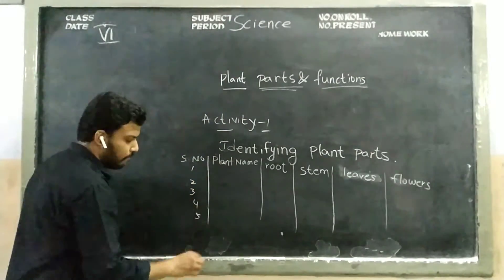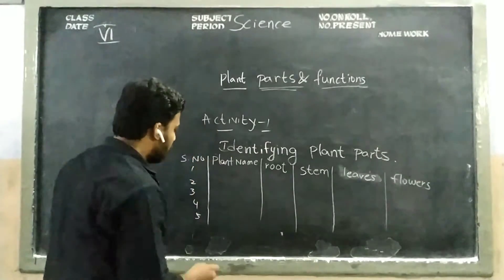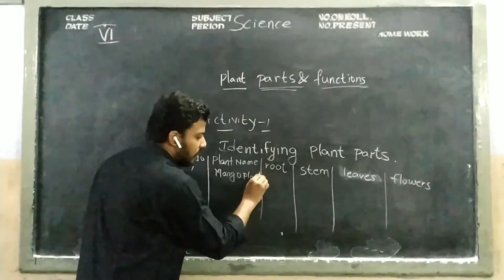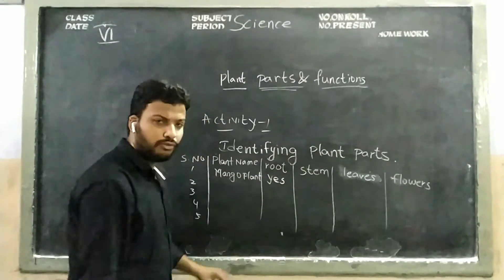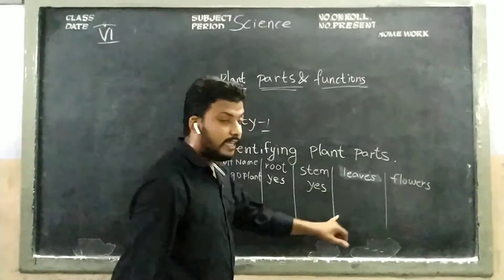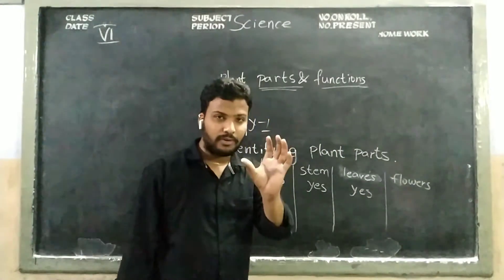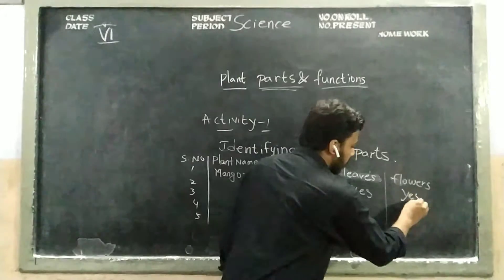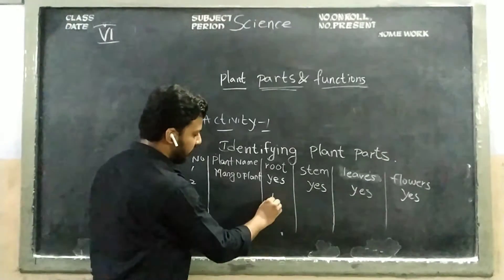For five plants, you try to collect five plants and write the plant name. For example, mango: the mango plant contains roots — yes, it contains roots. It contains stem — yes. And leaves — yes. Before getting a fruit, you will observe flowers from the mango tree, so yes. If there is no presence of any part of a plant, you write accordingly.